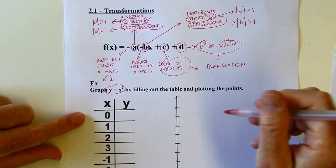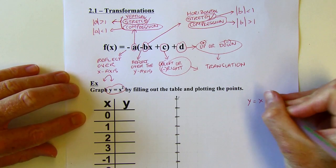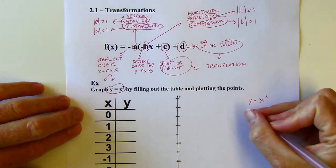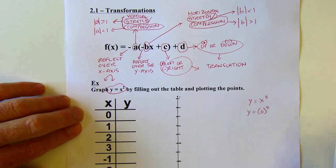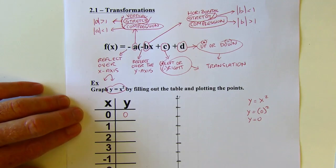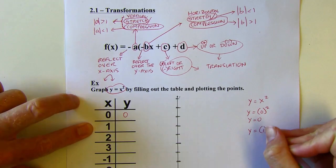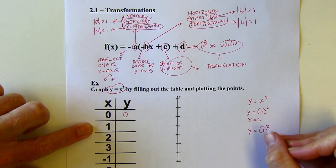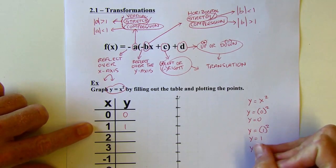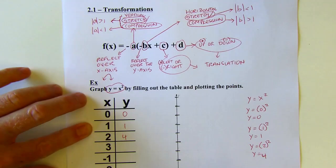You could always make an xy table. For y equals x squared: when x is 0, y is 0; when x is 1, y is 1; when x is 2, y is 4. I'm just squaring these x values. When x is 3, y is 9. For negative values: negative 1 times negative 1 is positive 1; negative 2 times itself is positive 4; negative 3 times itself is positive 9.